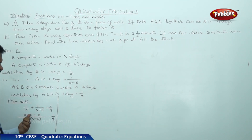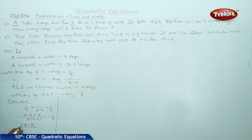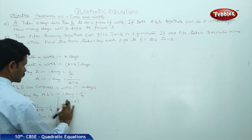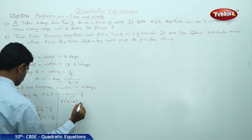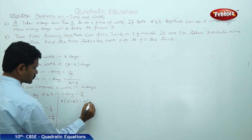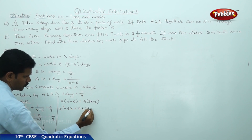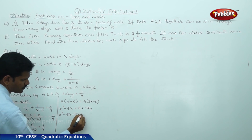That is, X minus 6 plus X by X into X minus 6 is equal to 1 by 4. Simplifying the numerator and taking 2 common gives 2 into X minus 3. Cross multiplying: X into X minus 6 is equal to 4 times 2X minus 6. That is, X squared minus 6X minus 8X plus 24 is equal to 0.